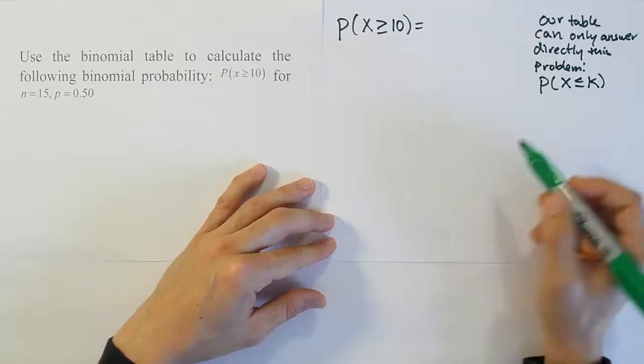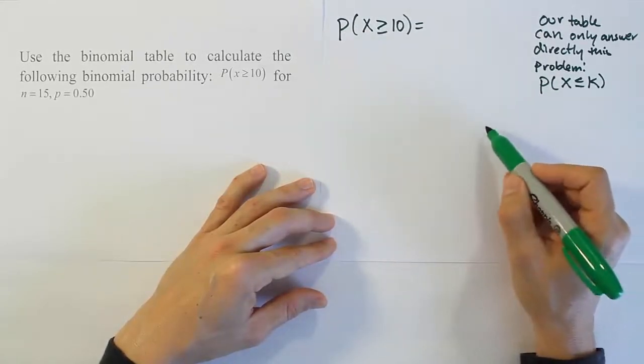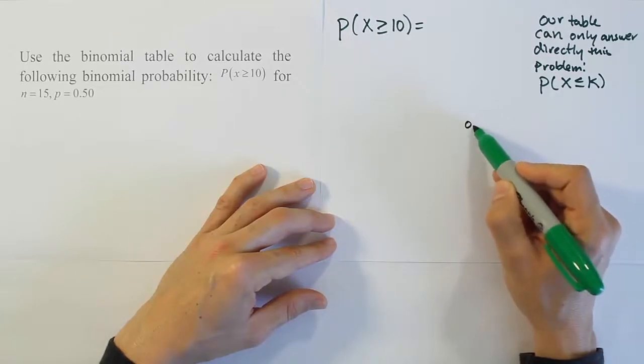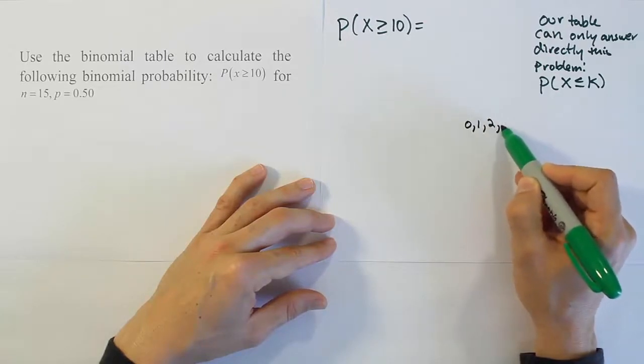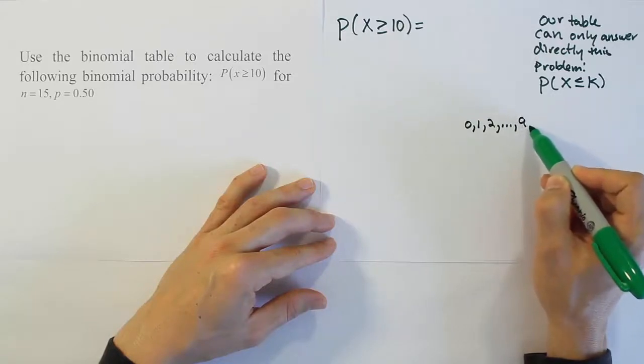So in the case of you know looking at when n is 15, I'm gonna draw a little drawing here. Let's say we have the number 0, 1, 2, dot dot dot, all the way up to say 9...